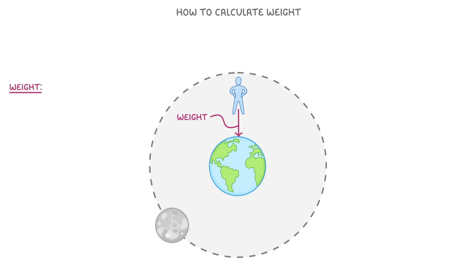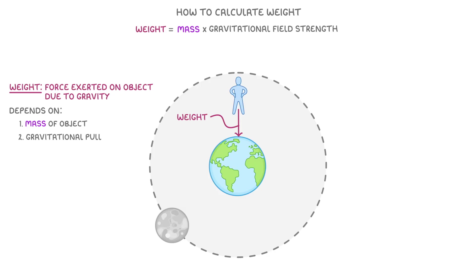We can define weight as the force exerted on an object due to gravity, and it depends on both the mass of the object and the gravitational pull acting on it. To calculate an object's weight, we take its mass and multiply it by the gravitational field strength, which tells us exactly what the force of attraction is.